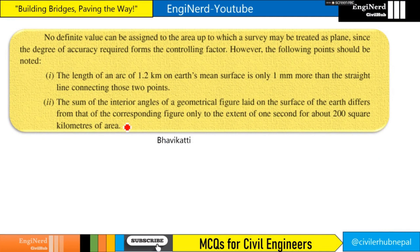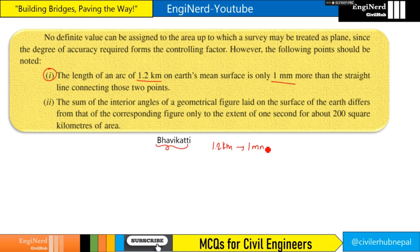Babi Kutti says the length of an arc of 1.2 kilometers on the earth's surface is only 1 mm more than the straight line connecting those two points. So for 1.2 km it's 1 mm, and if we scale up to 12 kilometers, it comes out to be 10 mm, which is 1 centimeter — the same result.